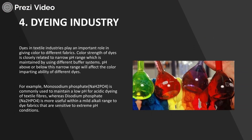Apart from food industries, buffering agents are widely used in the dyeing industry. Dyes in textile industries play a very important role in giving colors to different fabrics. The color strength of dyes is closely related to pH range, and maintaining a narrow pH range can only be done with buffering agents. pH above or below this range will affect the color. For example, monosodium phosphate is commonly used to maintain a low pH for acidic dyeing of textile fibers, whereas disodium phosphate is more useful within a mild alkaline range to dye fabrics that are sensitive to extreme pH conditions.